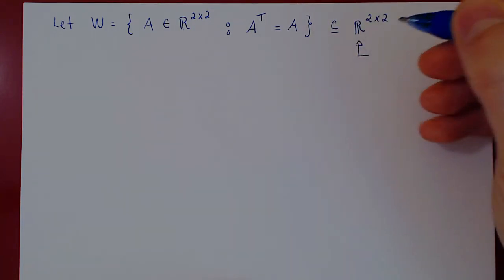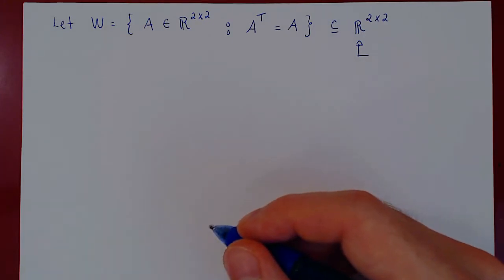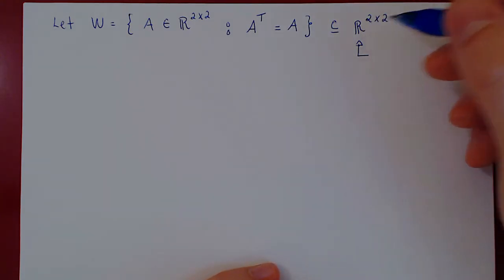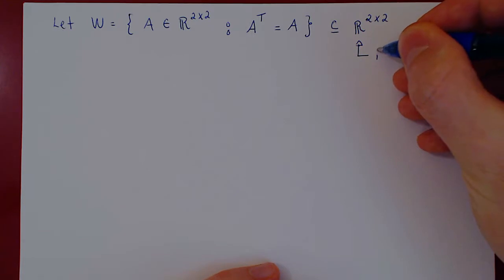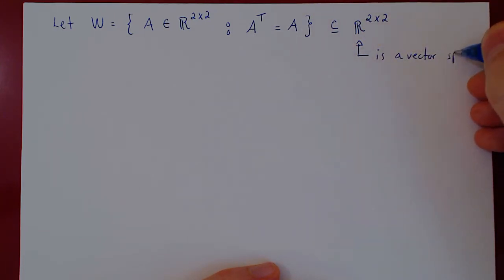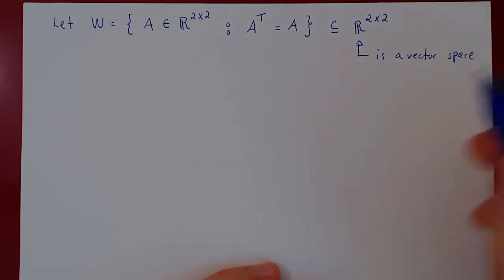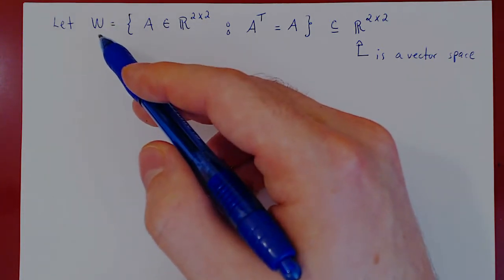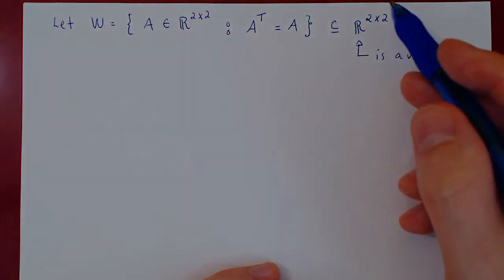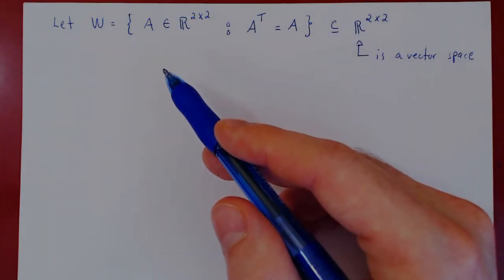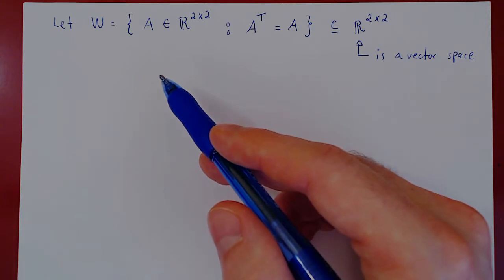We know that the space of M by N matrices, where M and N are fixed, is a vector space for any M and N. So the set of all 2 by 2 matrices is a vector space. Since W is a subset of a known vector space, we can use the subspace theorem and only need to check the two closure axioms.